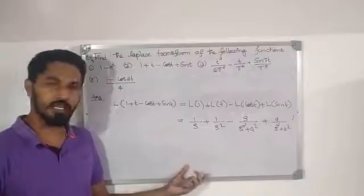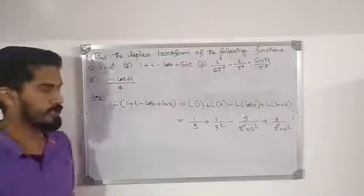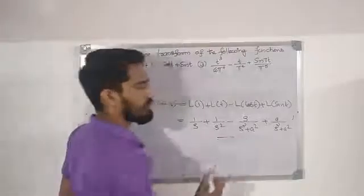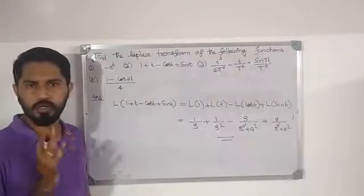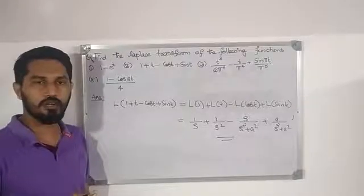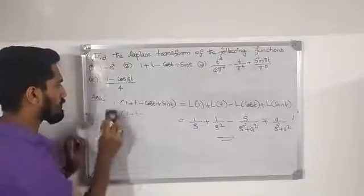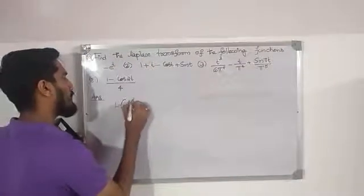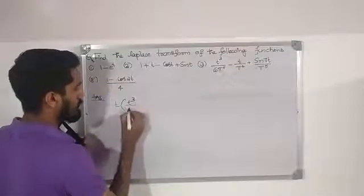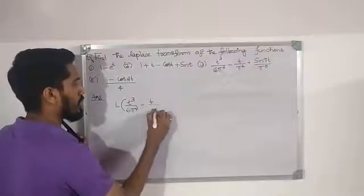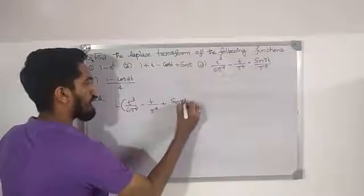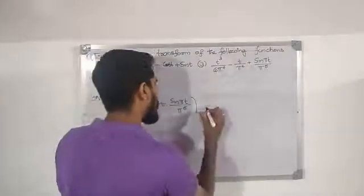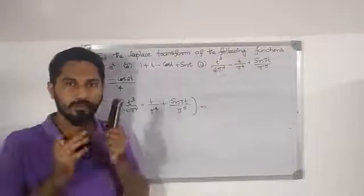We simplify that result. Next, the third problem: L{t³/(6π²) - (t/π)^4 + sin(πt)/π^5}. We apply linearity to separate this into L{t³/(6π²)} minus L{(t/π)^4} plus L{sin(πt)/π^5}.